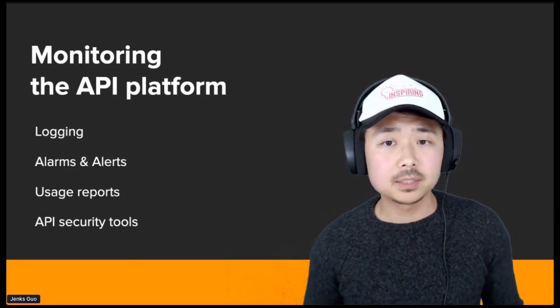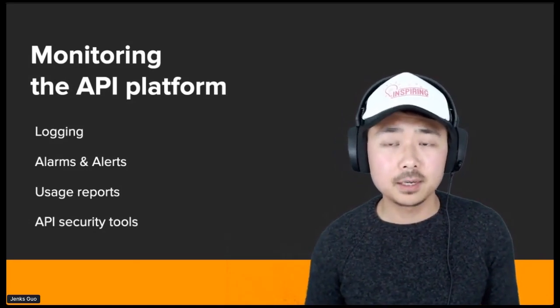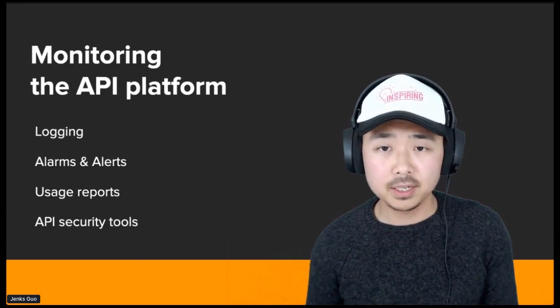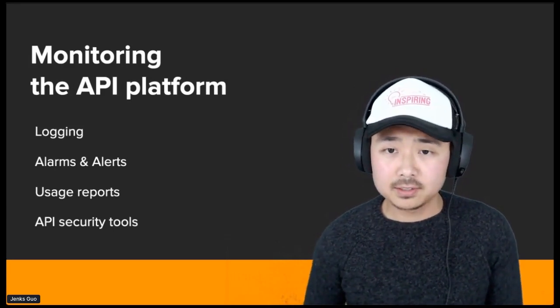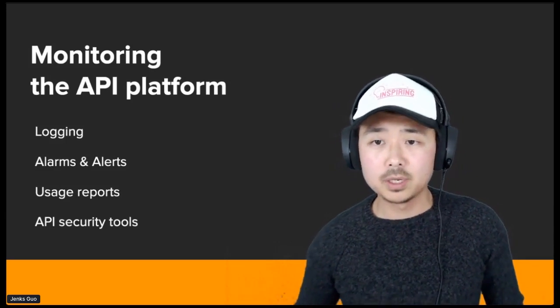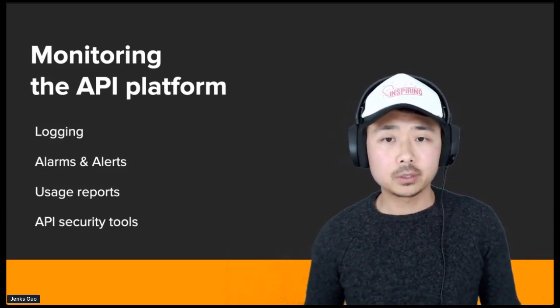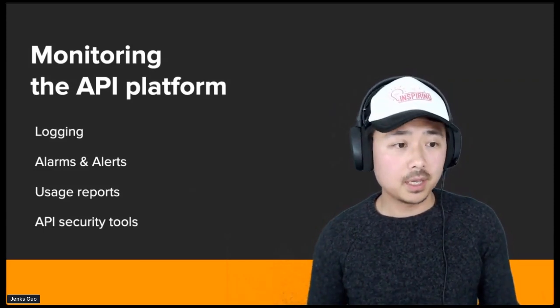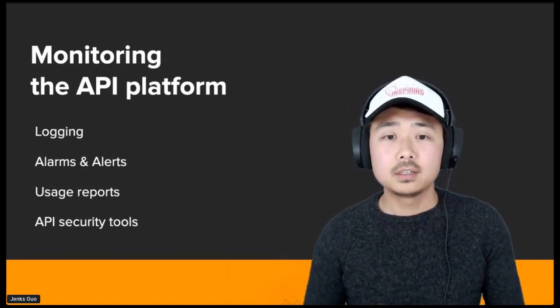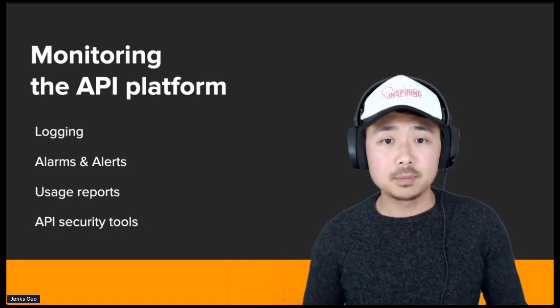If your company has been running an API platform for some time now, you probably have some kind of monitoring system in place to ensure the platform is stable. Whether it is a logging system that triggers certain alarm when a breaking event happens or a periodic report that your operations engineer look at. These days, there are also automated API security tools that can detect abnormal API behaviors.